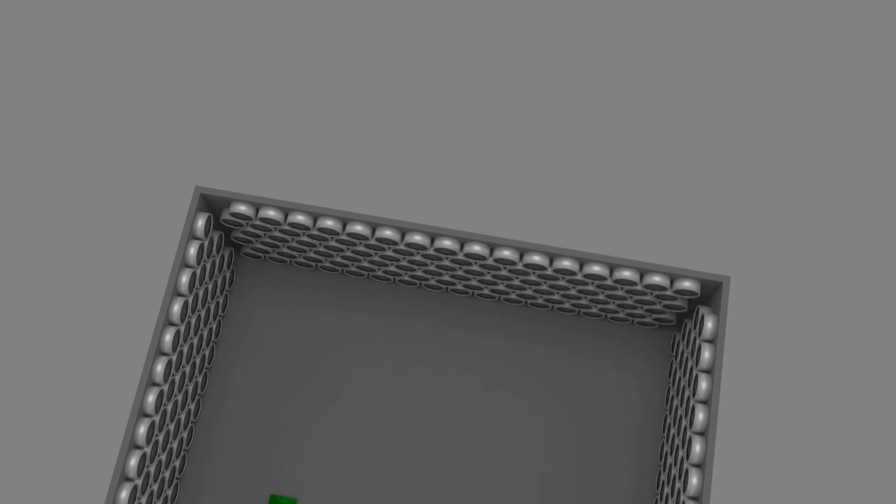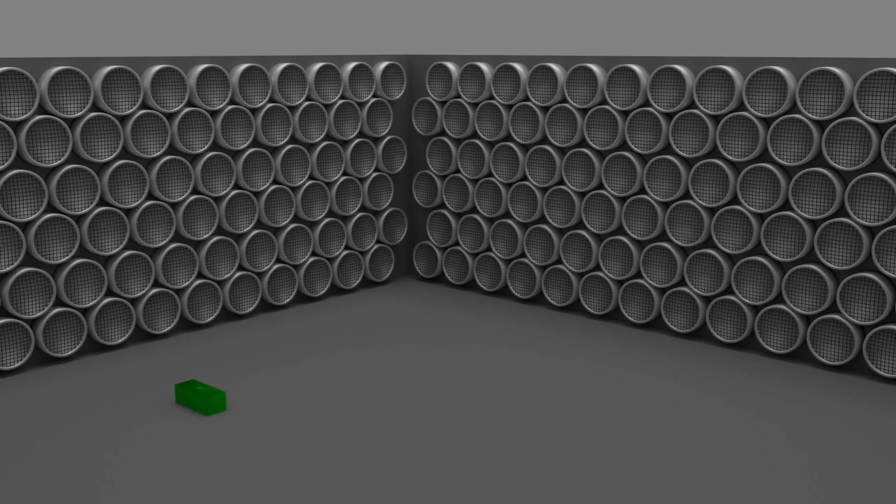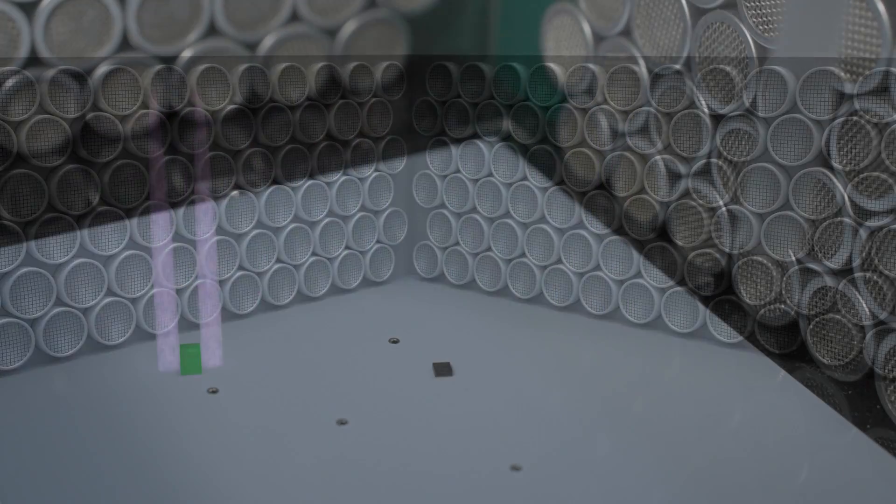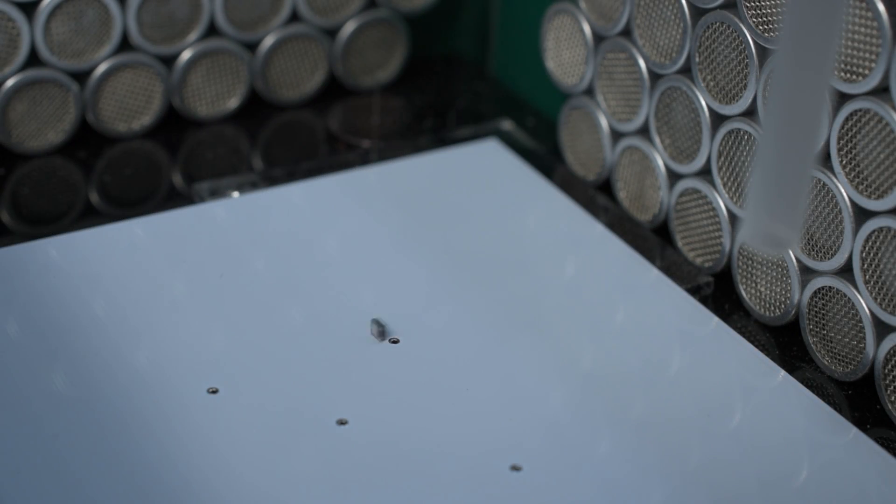So what's ultrasonic manipulation? Say you have an array of ultrasonic transducers that emit ultrasonic waves and you can control all the transducers individually. Then you can create certain pressure profiles in the air that can trap, rotate, and move particles or components.